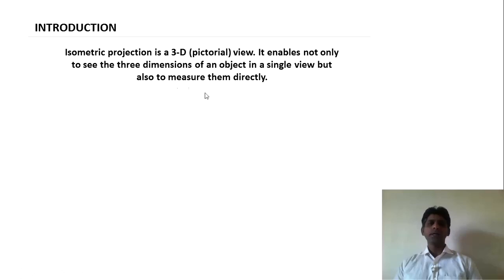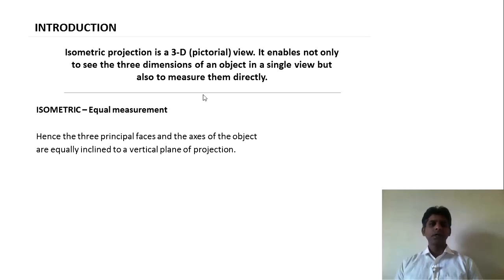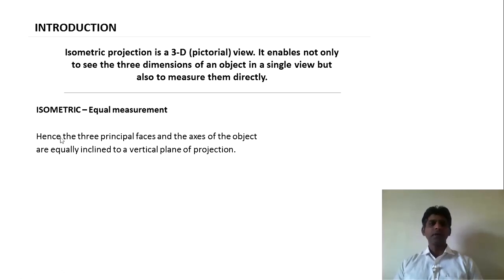How this is possible will be subsequently clear when we move on to the slides. Let us understand the meaning of the word isometric. Iso means equal and metric is going to be a measurement. So whenever we say isometric, we are basically saying equal measurements. The principal faces and the axis of the object are equally inclined to the vertical plane of projection.